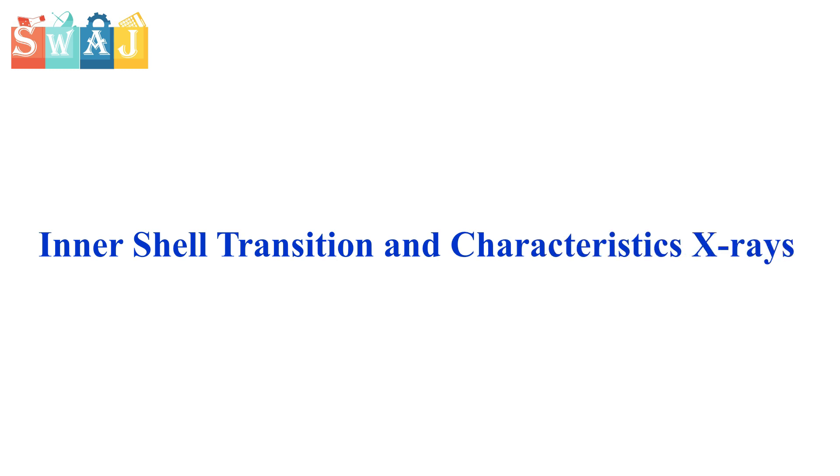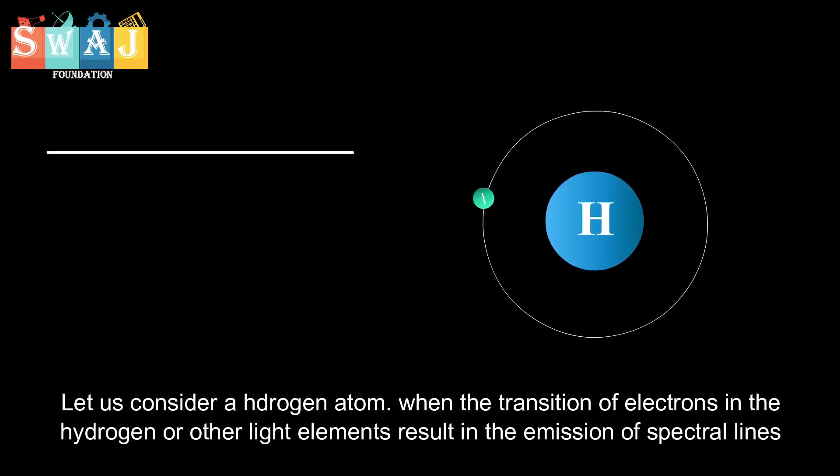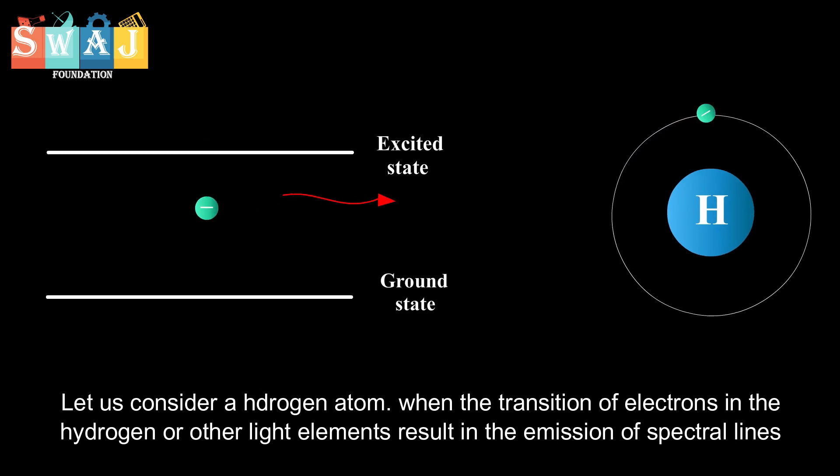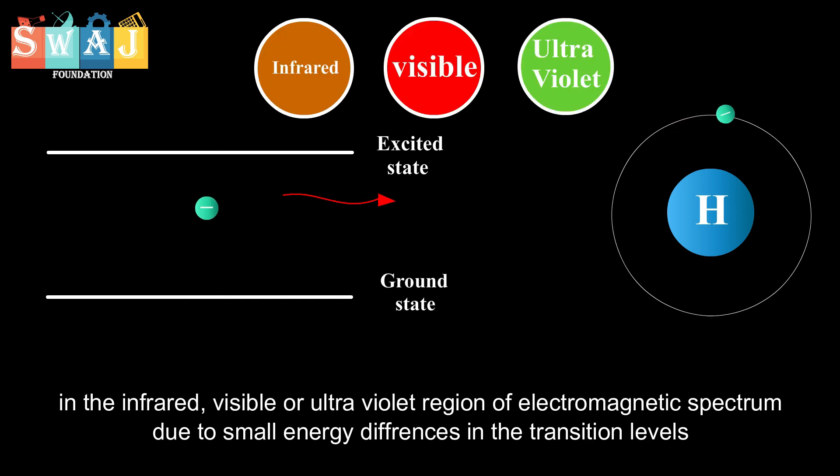Inertial transitions and characteristic X-rays. Let us consider a hydrogen atom. When the transition of electrons in the hydrogen or other light elements result in the emission of spectral lines in the infrared, visible, or ultraviolet region of electromagnetic spectrum due to small energy differences in the transition levels.